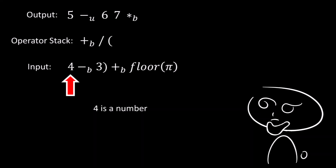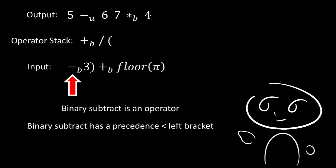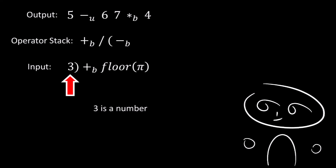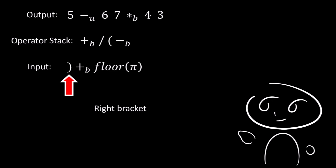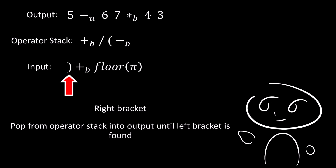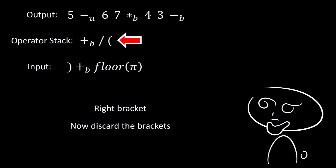Next, we find a 4, which simply gets pushed into the output. Next, we find binary subtract, which is an operator. Binary subtract has a precedence less than left bracket — note that brackets are treated as having infinite precedence since they come before all other operators — so the binary subtract is pushed to the operator stack. Then we find a 3, which is a number, so we push it into the output. Next, we find a right bracket, so we pop from the operator stack into the output until we find a left bracket. The binary subtraction is moved into the output, then we find the left bracket and discard both brackets.